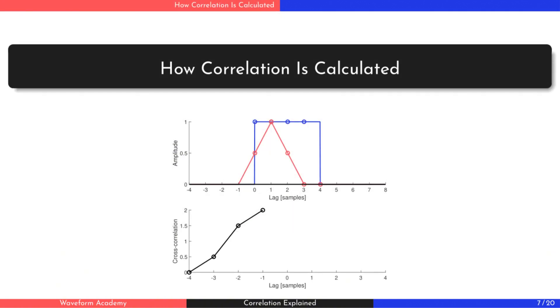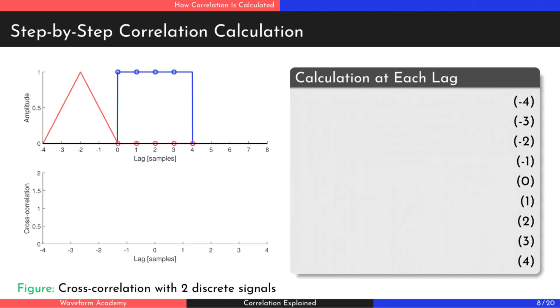Now that we understand what correlation is, let's walk through how it's calculated. We start with two digital signals, a blue rectangle and a red triangle, where the red triangle is delayed by four samples.